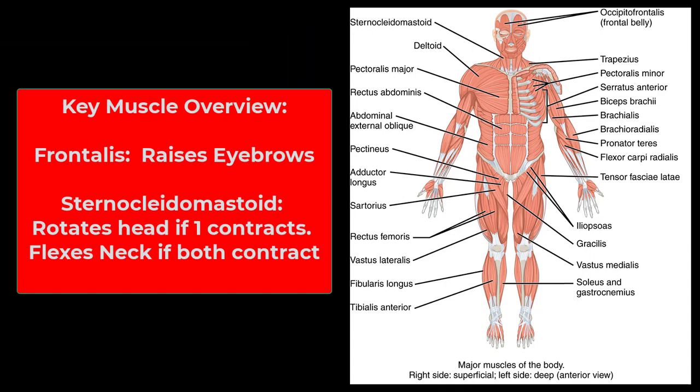Let's go ahead and dive in. I'll show all the muscles of the upper half of the body on the front and back, then jump to the lower half. Let's start with the frontalis — the frontal belly of the occipitofrontalis. Its action is to raise your eyebrows.